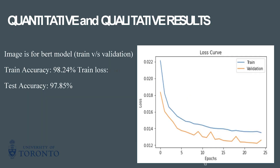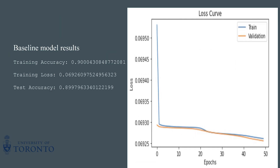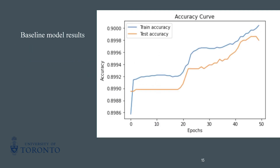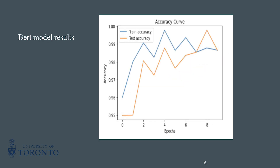Talking about the quantitative and qualitative results, this is our loss curve for the BERT model. The accuracy for the BERT model was much higher than the baseline model. The train accuracy was around 90 percent and the test accuracy was around 97 to 98 percent. For the baseline model, the train accuracy and the test accuracy were around 90 percent. This is the accuracy curve we obtained for the baseline model, and this is for the BERT model.